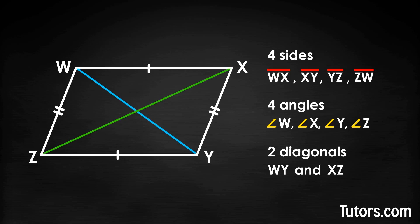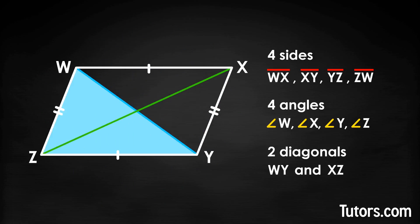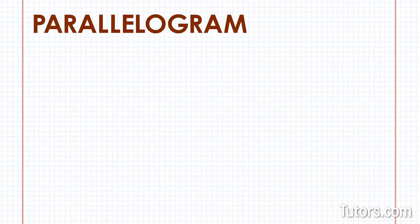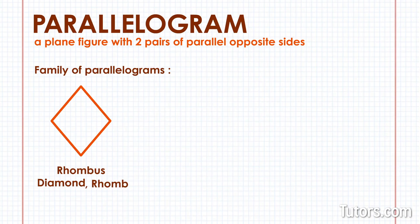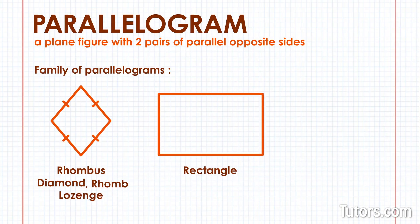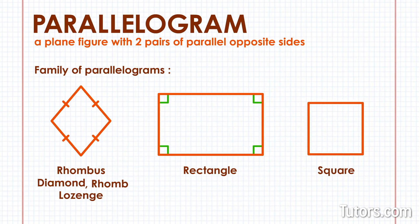One interesting property of a parallelogram is that its two diagonals bisect each other — they cut each other in half. Another property is that each diagonal forms two congruent triangles inside the parallelogram. The name 'parallelogram' gives away one of its identifying properties: two pairs of parallel opposite sides. Other shapes are types of parallelograms: a rhombus, also known as a diamond, rhomb, or lozenge, is a parallelogram with four congruent sides. A rectangle is a parallelogram with four congruent interior angles. A square is a parallelogram with four congruent sides and four congruent interior angles.